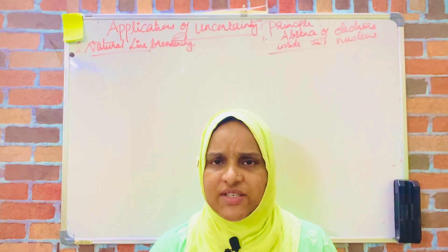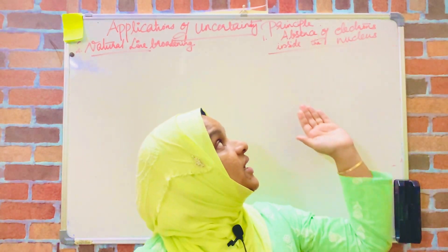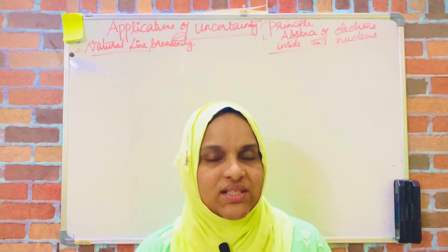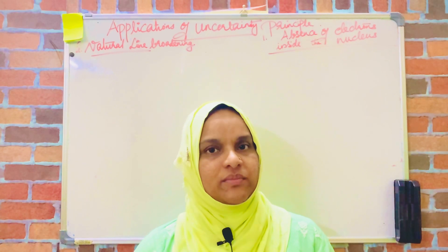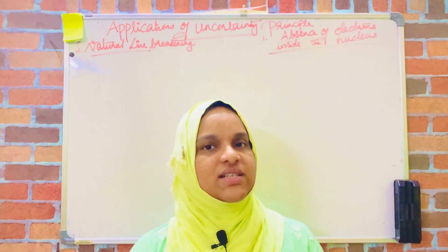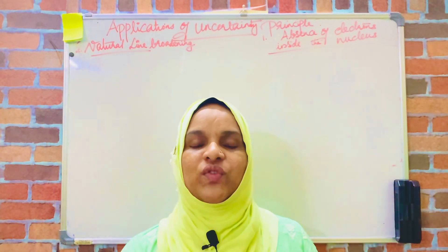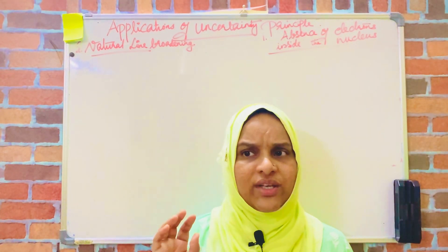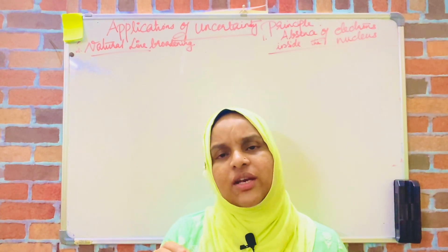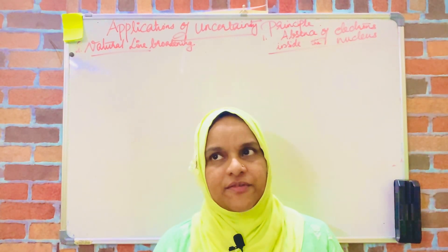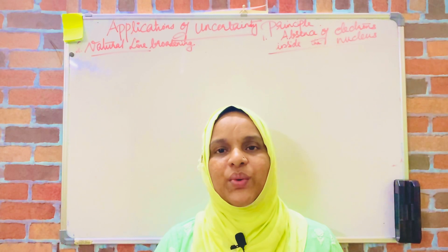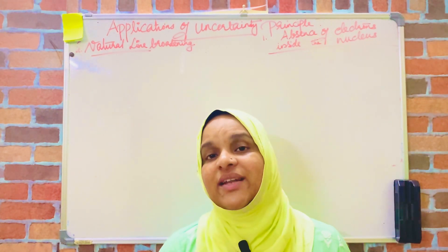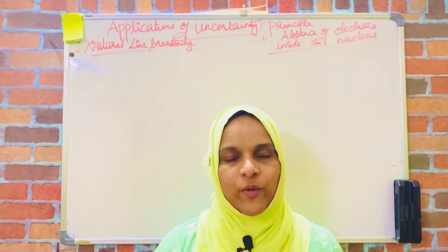The first application of the uncertainty principle is that we can explain the absence of electrons inside a nucleus using Heisenberg's uncertainty principle. We know that the composition of the nucleus consists of neutrons and protons. So if electrons were present inside the nucleus, what energy should they possess? From that, we can explain the absence of electrons inside the nucleus.